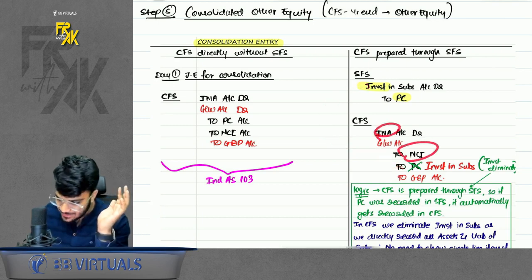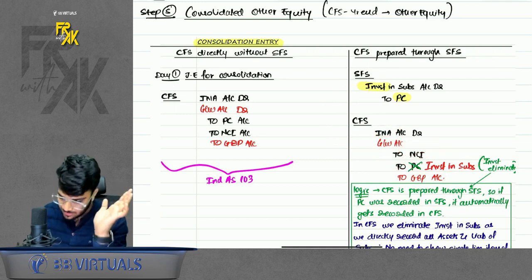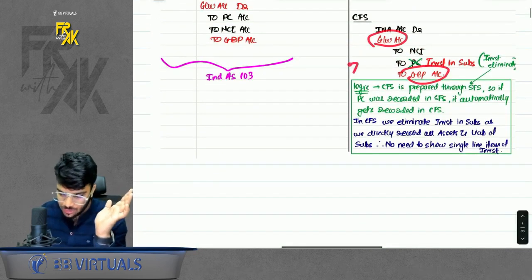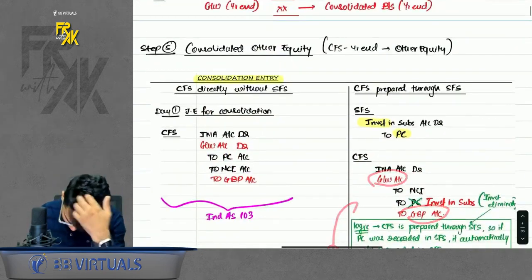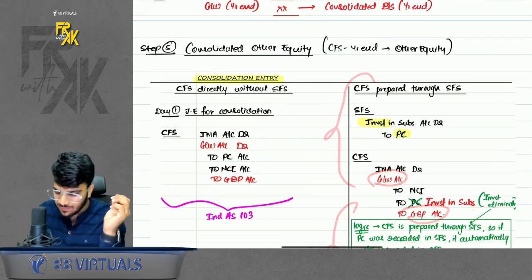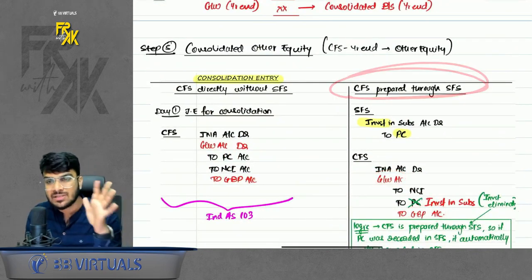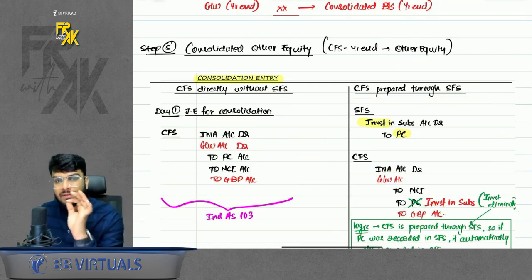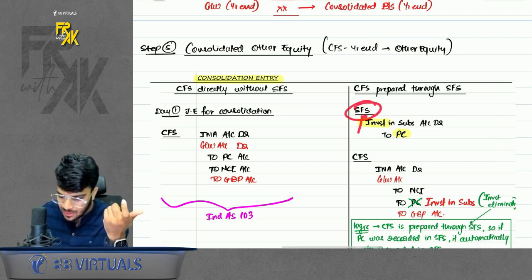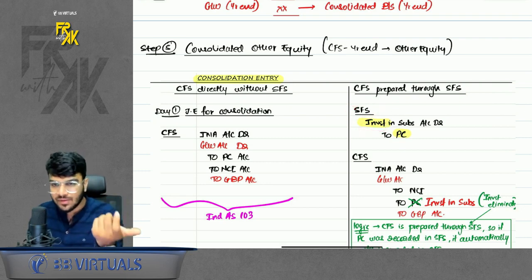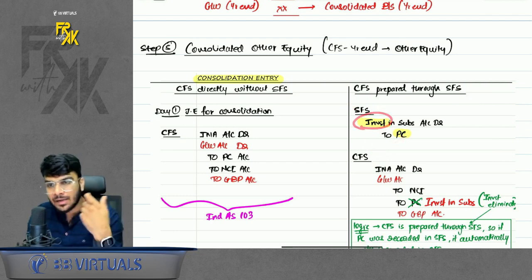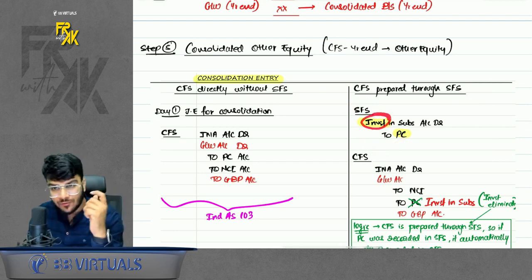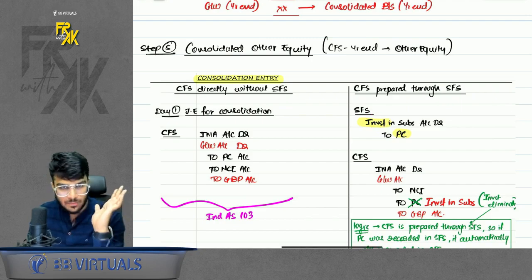In IND AS 110, mostly we use the method where the SFS entry has already been passed. The PC amount is not given directly, so look at the SFS investment amount — that will be the PC, because to record the investment you must have passed the entry 'Investment to PC'. So from the investment amount, you can get the hint of PC.